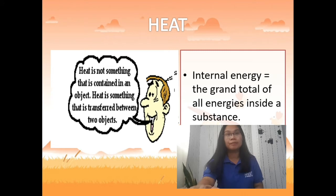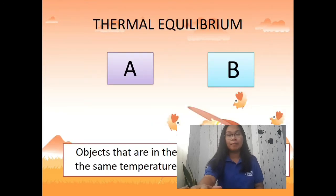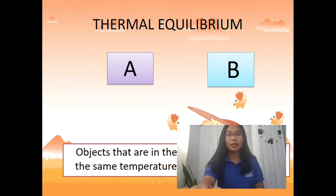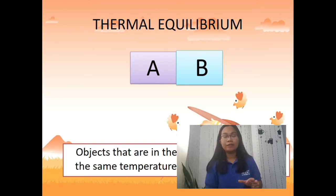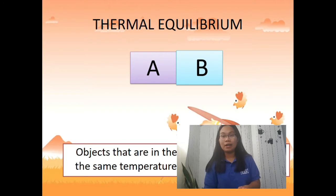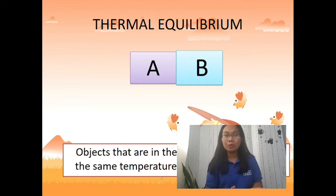If we have object A and object B with different initial temperatures, when they are in thermal contact there is a transfer of energy. If A has a higher temperature compared to B, energy is transferred from A to B — A will have a lesser temperature and B will have a higher temperature than its initial. If they are in thermal equilibrium, that means they will have the same temperature.